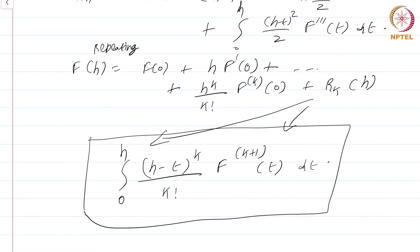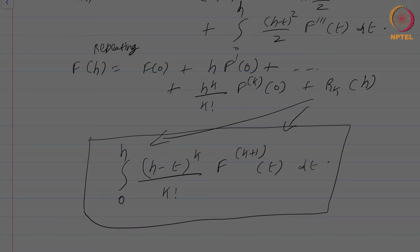Both forms have their advantages and disadvantages, which we will explore in detail when we study power series and prove convergence for series involving sin, cosine, and so on. This is a course on real analysis, and you have just watched the module on Taylor series with integral form of the remainder.